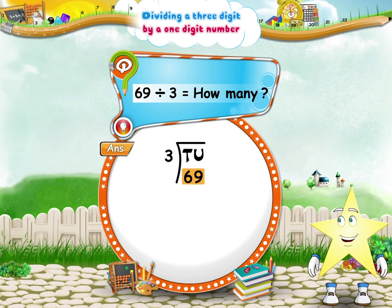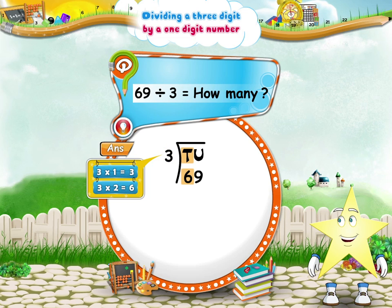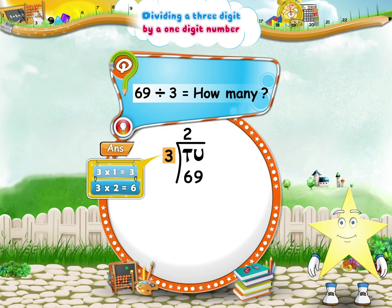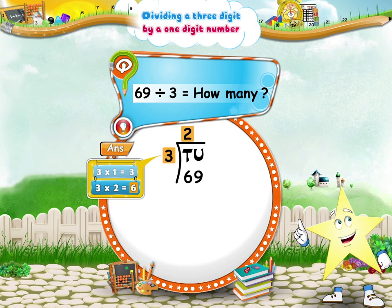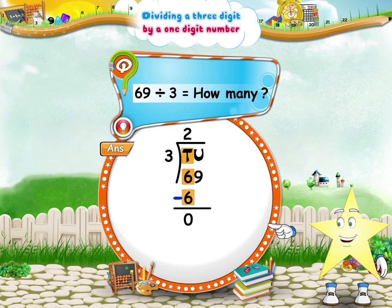To divide 69, we first look at the digit which is in the tens place of the dividend. The digit is 6. Say the three times table up to 6. Divide six tens by 3. Three twos are 6. Write the two above the line in the tens place of the quotient. The product of 3 and 2 is 6. Subtract this product from six tens. Zero tens remains.